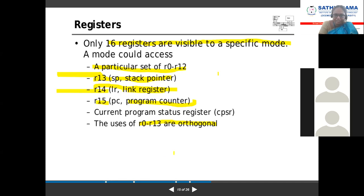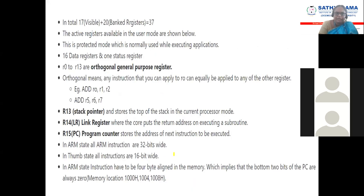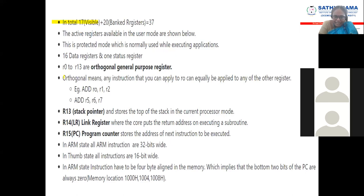We have discussed that 37 registers are there and only 16 are visible to the user. Some references say 17 are visible because of one status register. Orthogonal means any instruction can be applied equally to any of the registers — I can put ADD R0, R1, R2 or ADD R5, R6, R7. That is the meaning of orthogonal register.